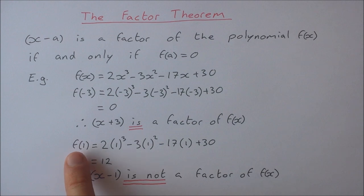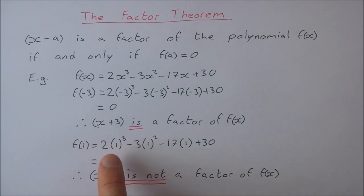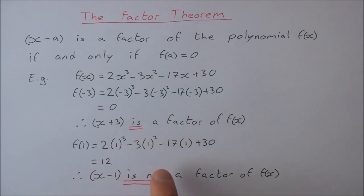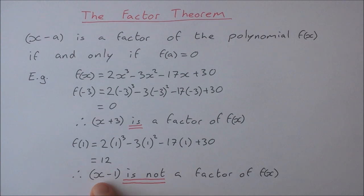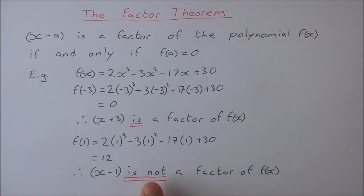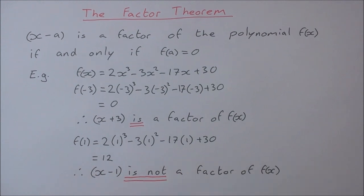In this case it doesn't work. f of 1: 2 times 1 cubed minus 3 times 1 squared minus 17 times 1 plus 30 gives 12. So therefore x minus 1 is not a factor of f(x).